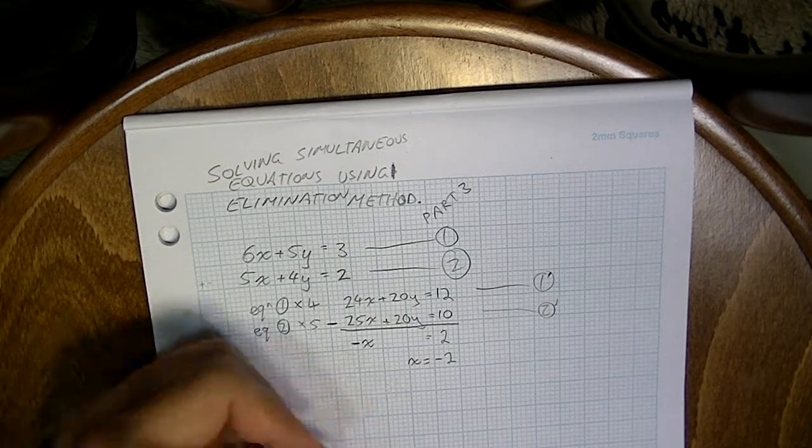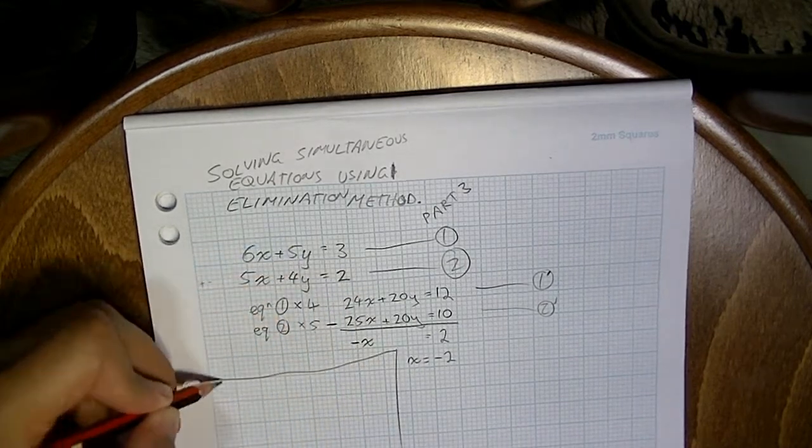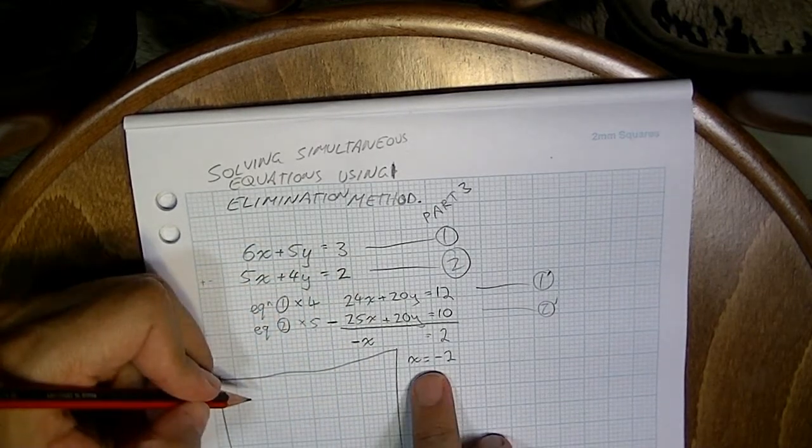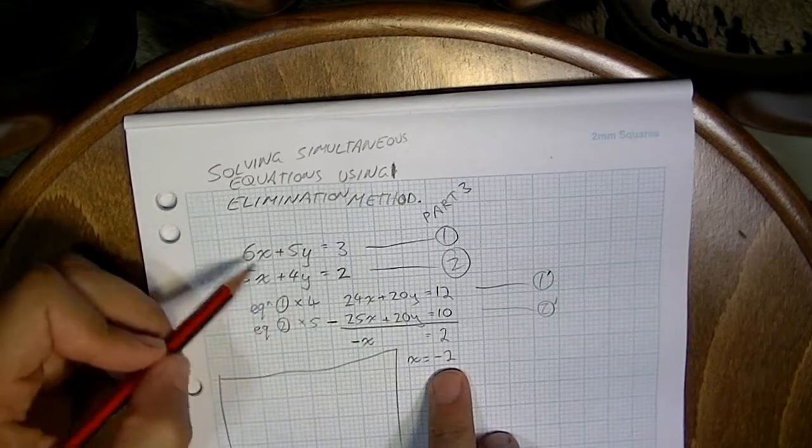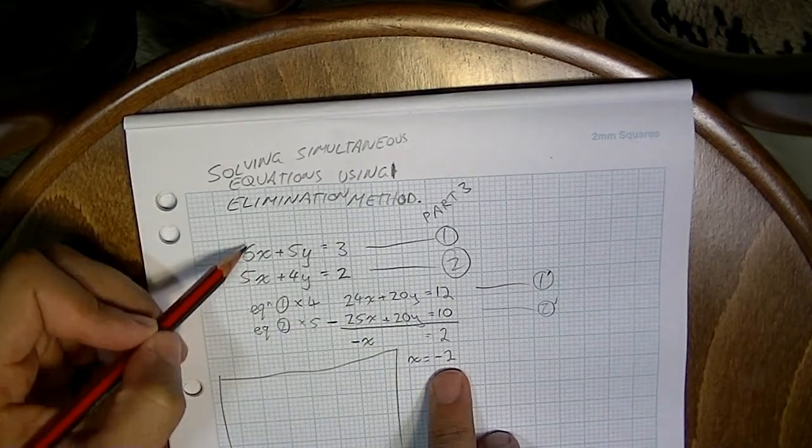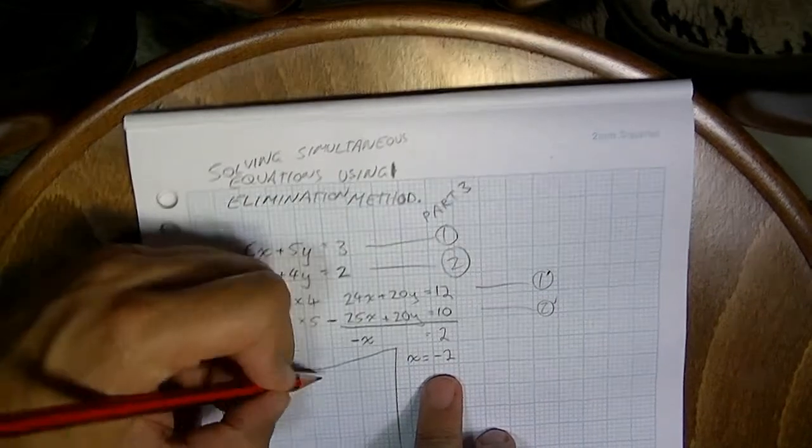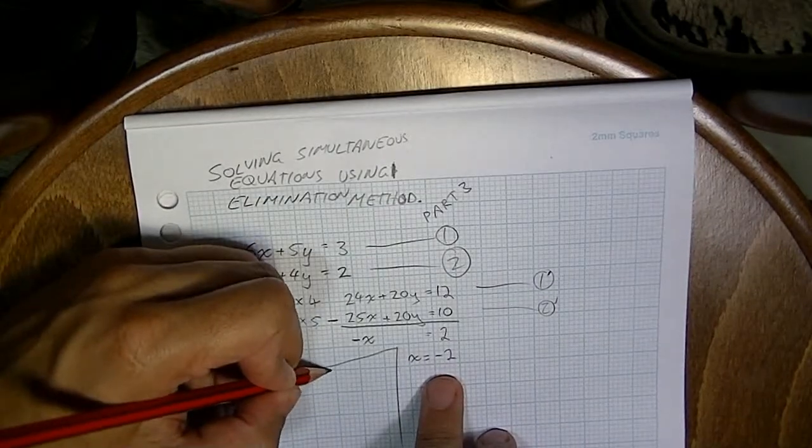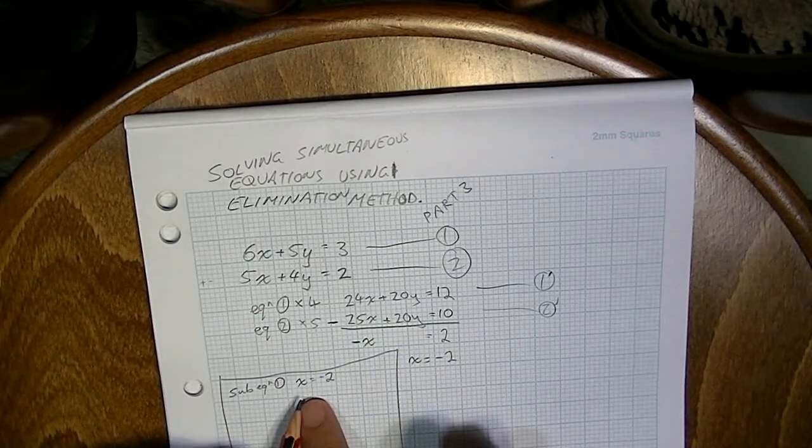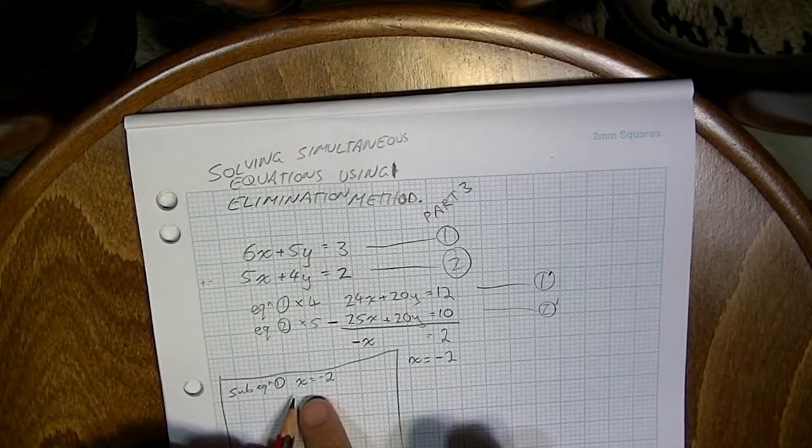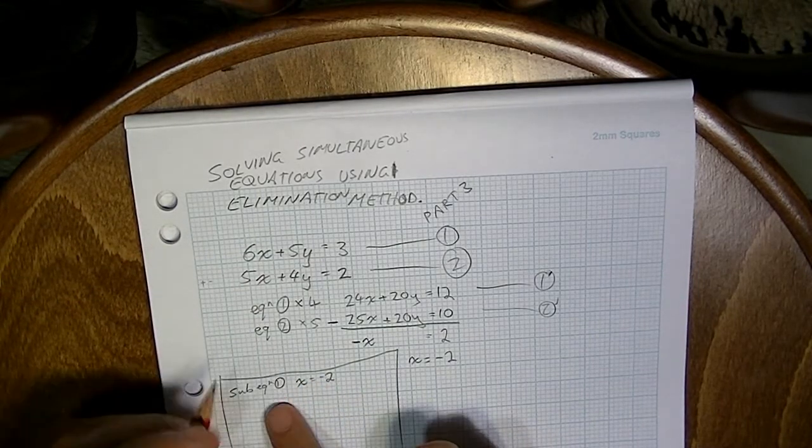We're not finished however. We need to keep moving here. We need to sub x equals negative 2 into one of those equations. Neither looks any easier than the other, so I'll just sub it into equation number 1. Sub x equals negative 2 into equation 1.